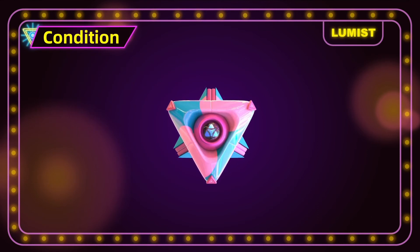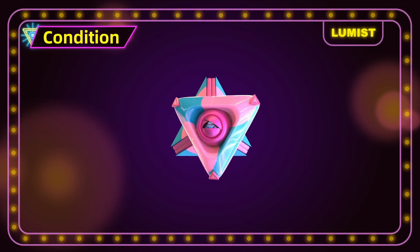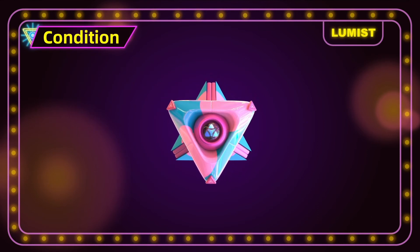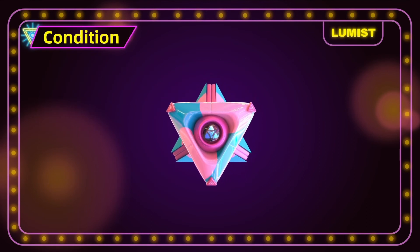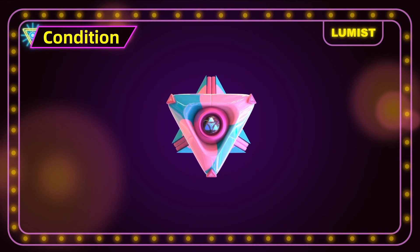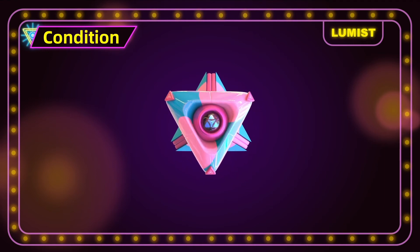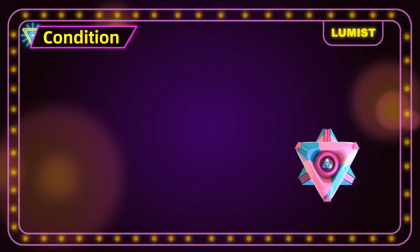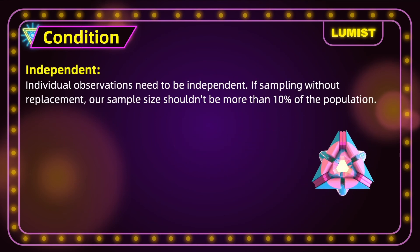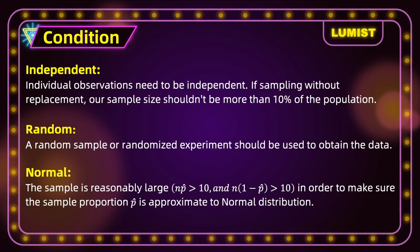We discussed some conditions for confidence intervals in our earlier videos. Let's just review these. The required conditions for constructing a confidence interval for population proportions are independence, randomness, and normality.